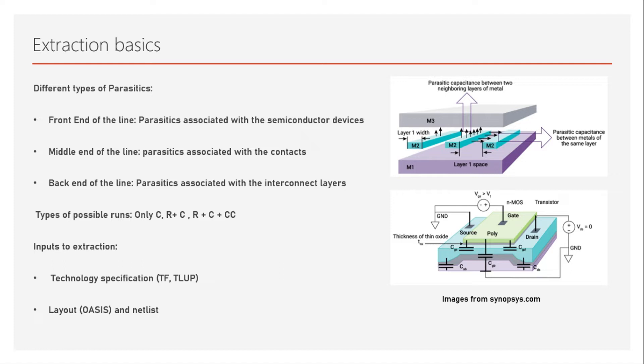The second type is Middle End of the Line (MEOL) parasitics, associated with contacts. These are sometimes categorized with interconnects but not always, because in modern technology nodes contacts have very stringent rules and high resistance. Different materials are now used — such as tungsten plugs and wolfram — rather than the copper or aluminum used in previous nodes, requiring a different extraction approach.